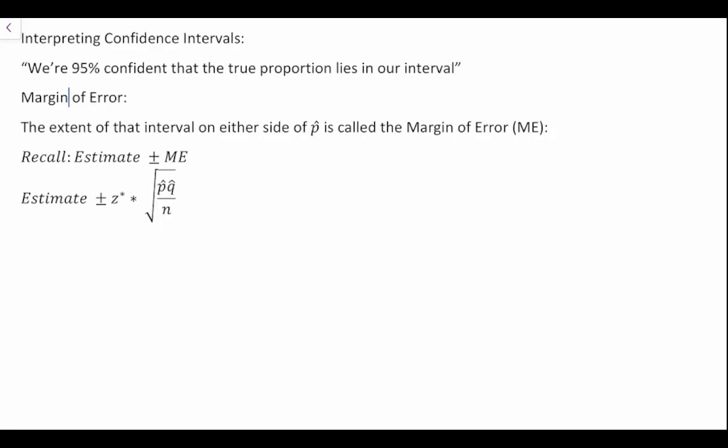Before we get too far into the question, we need to look at what is a confidence interval. Typically we'll see statements that say we're 95% confident in this result, plus or minus a certain percent. Really what this means is that the analyst is saying we are 95% confident that the true proportion lies in our specified interval.